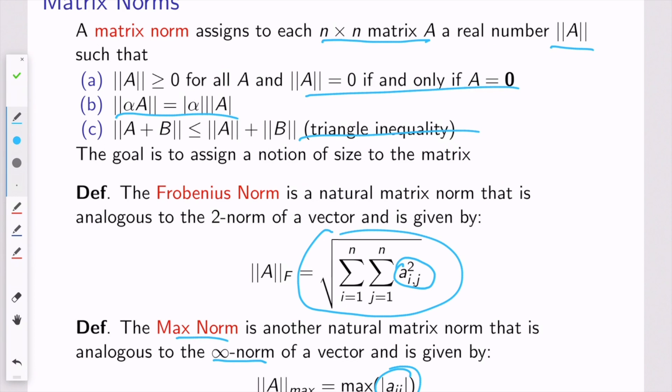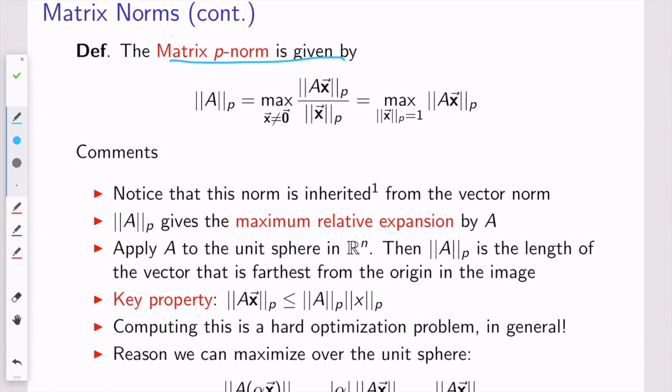So we're going to introduce another class of matrix norms. The matrix p-norm is given by this formula here. We denote it this way, and it's the maximum over all possible vectors that are not the 0 vector of the p vector norm of Ax divided by the p vector norm of x.